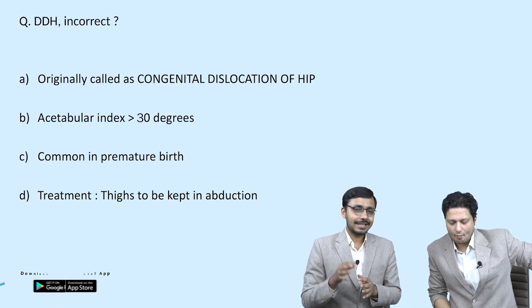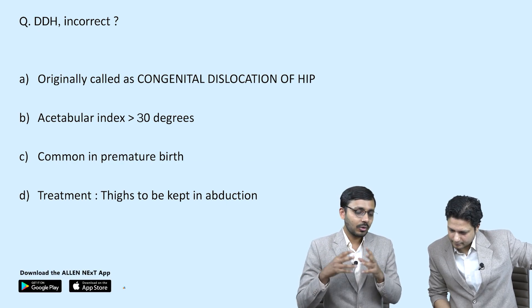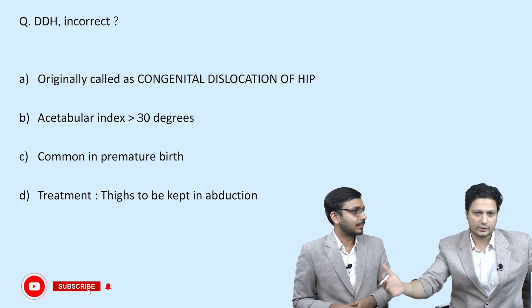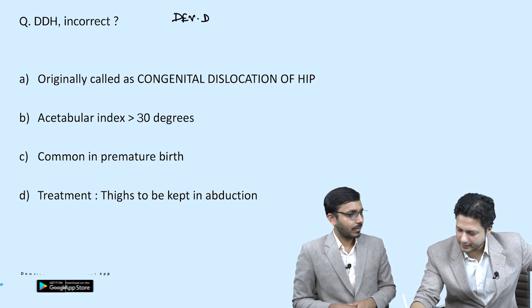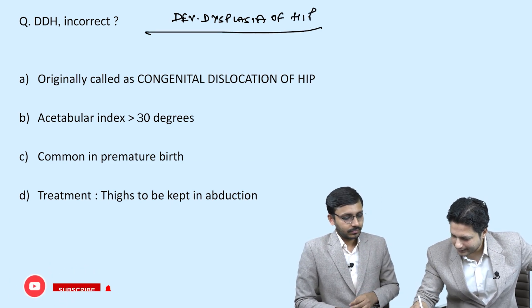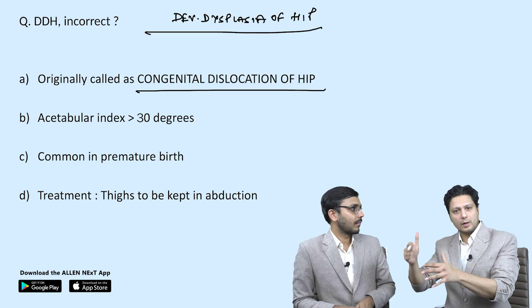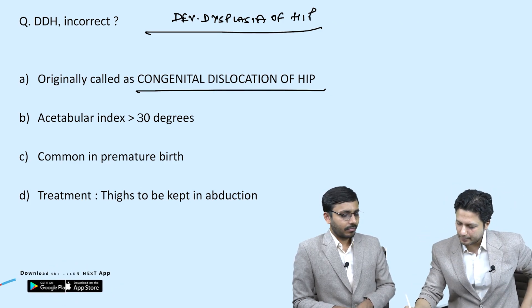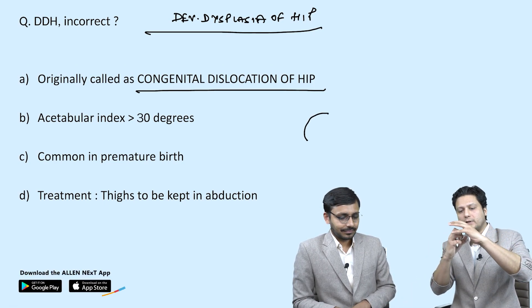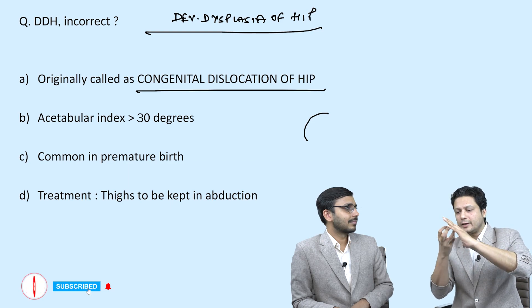Moving to the next question: which of the following is incorrect regarding DDH — developmental dysplasia of the hip? Option A states the condition was originally called congenital dislocation of the hip. This is true because DDH is a developmental abnormality where the acetabulum is relatively shallower than the femoral head, making dislocation possible.